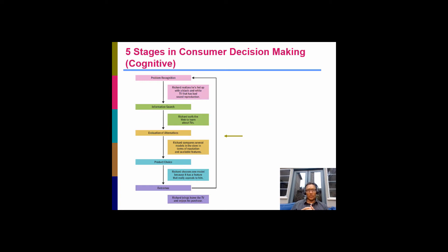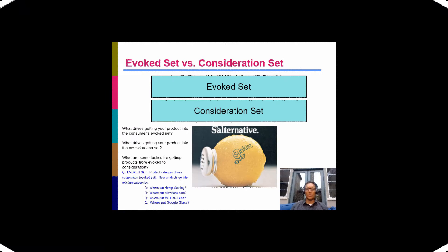The next step is evaluation of alternatives. This is an interesting and important step because the customer has gotten down to their shortlist of actual alternatives they're considering for purchase. As marketers, we want to make sure our product makes it to stage three, and I have some strategies in the next slide that explain how to do that.